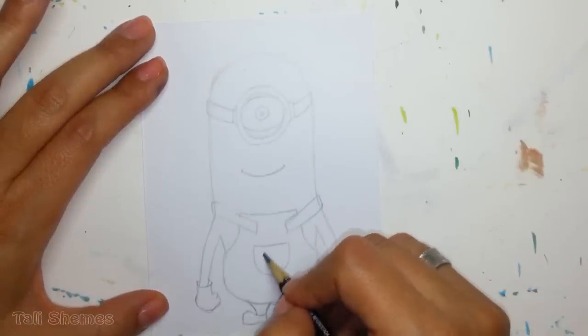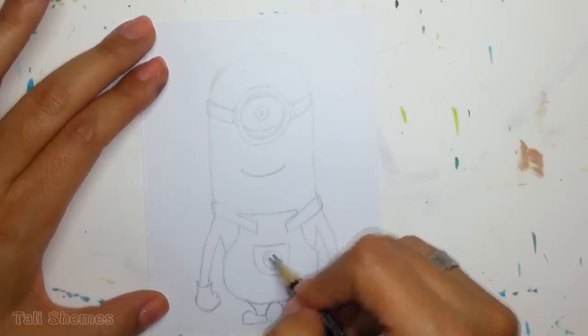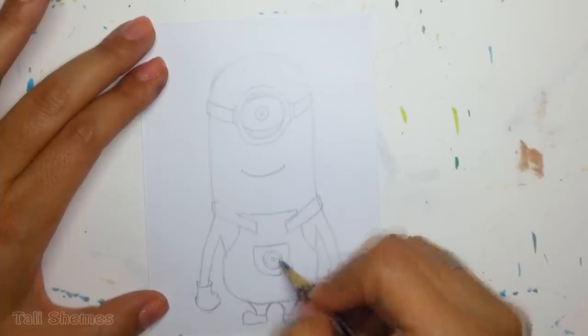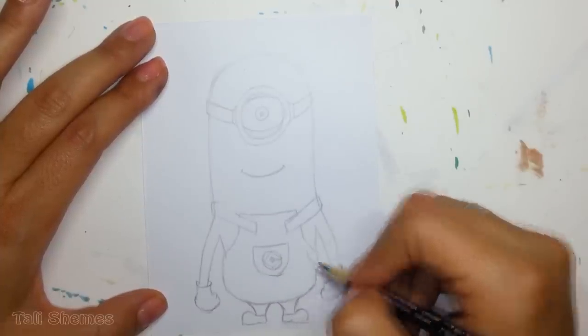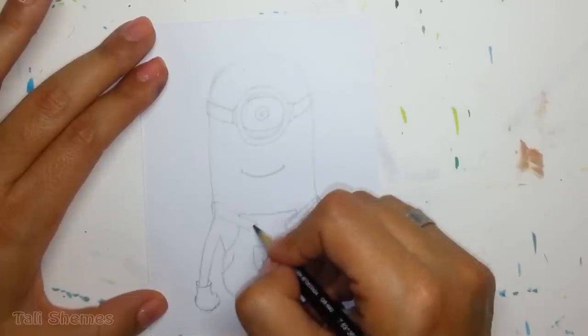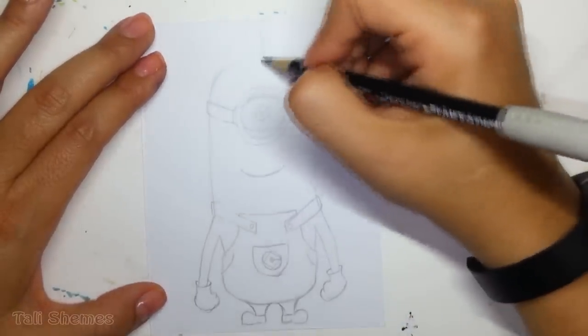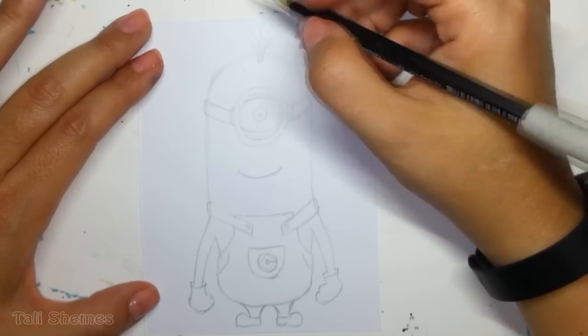Now I'm drawing the pocket with the Gru logo inside, and adding some more details like the pockets, the buttons, and of course the hair, which is just a few strands but gives the minion so much character.